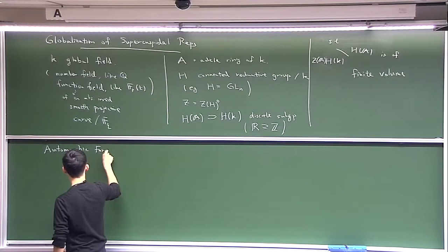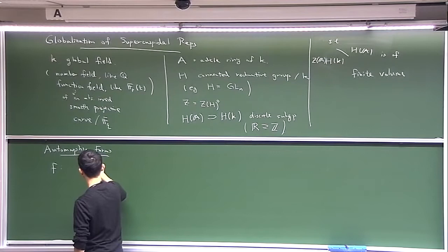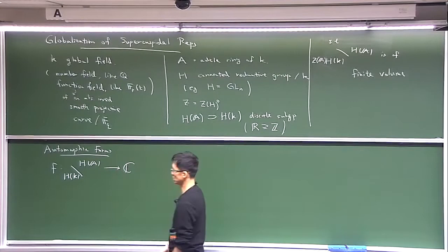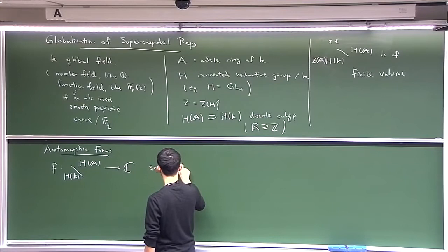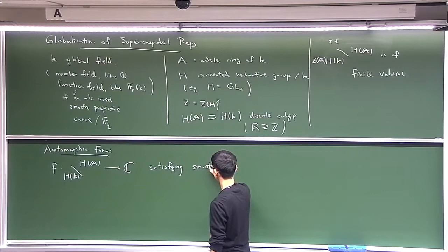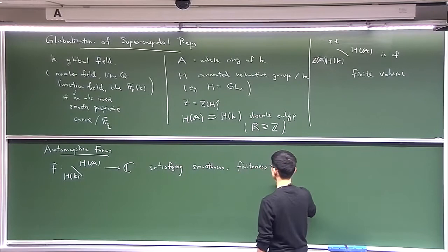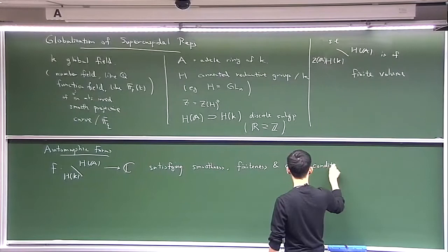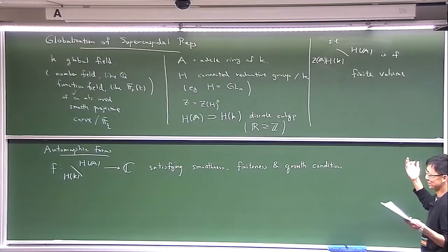Let me remind you of the notion of automorphic forms. An automorphic form is simply a function on this coset space, taking complex values. Of course, there are some conditions that are satisfied. The conditions would be some smoothness — you want your function to be continuous, in fact more than continuous — some finiteness, and growth conditions. For example, you don't want exponentially increasing functions; you just want functions of polynomial growth.